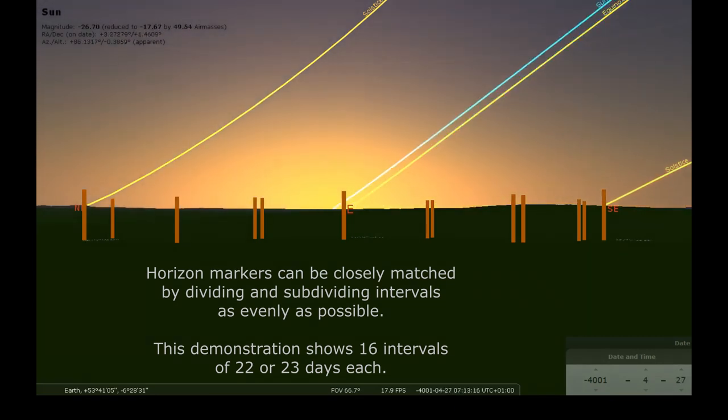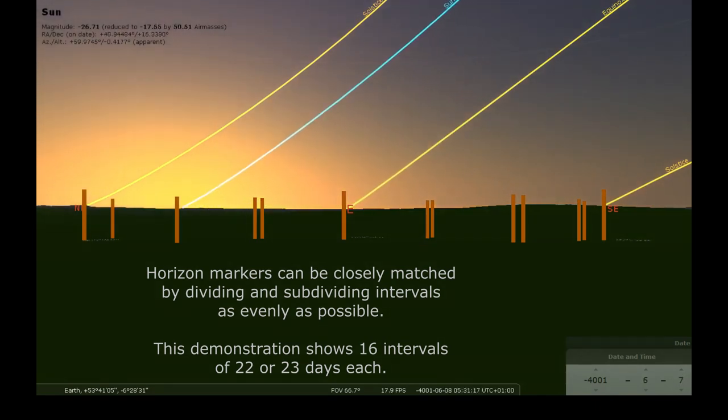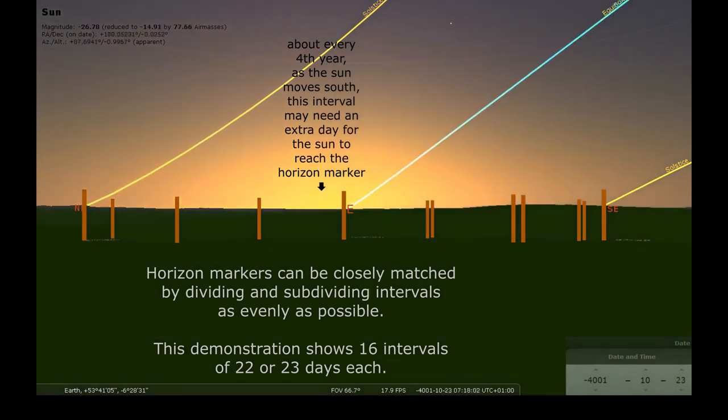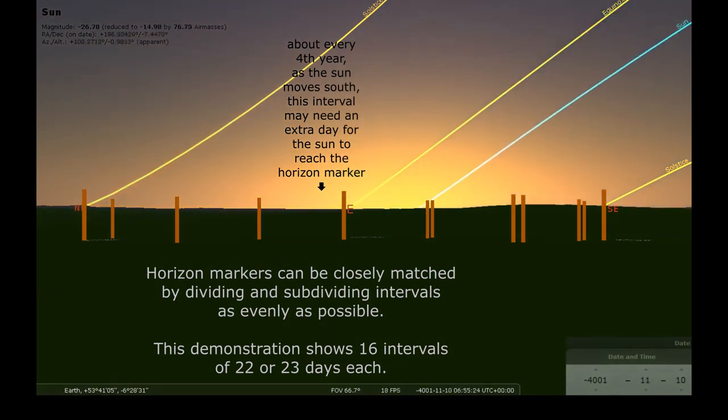The whole system would still need to be kept synchronized because of the fractional day of each year, and this would best be accomplished with one of the more central horizon markers, ideally one corresponding roughly to our modern concept of equinox when the Sun moves fastest. After around four years, the Sun would clearly be a day late to such a marker, and so the next counted interval would wait one day before resuming.